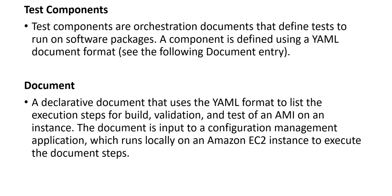Document — a document is the declarative document that uses the YAML format to list the execution steps for build, validation, and test of an AMI on an instance. The document is input to a configuration management application, which runs locally on an Amazon EC2 instance to execute the document steps.